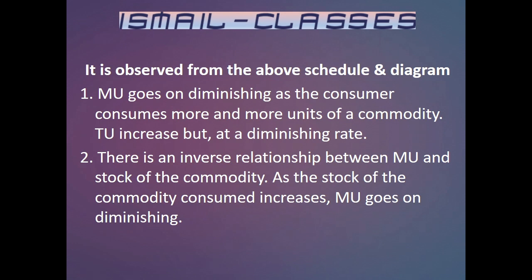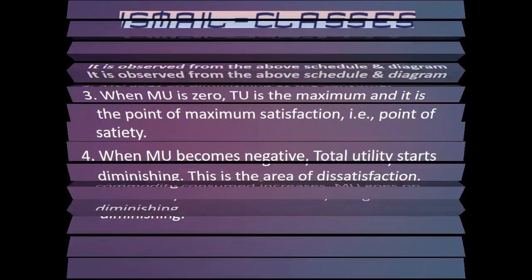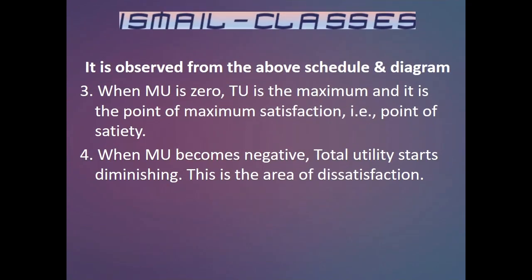Third, when marginal utility is zero, total utility is the maximum, and it is the point of maximum satisfaction, that is, the point of satiety. Fourth, when marginal utility becomes negative, total utility starts diminishing — this is the area of dissatisfaction.